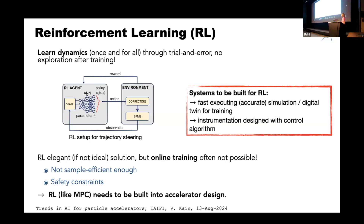We have moved away from online training toward offline training — essentially training on simulation. This means we need fast-executing, accurate simulations, or digital twins as we call them nowadays, and instrumentation designed alongside the control algorithm.